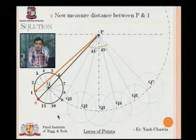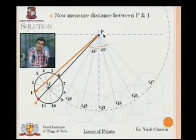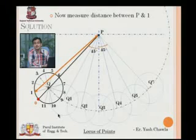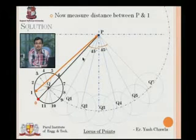How can I do it? See, I'll take the radius. I'll measure the radius from P till 1 because that is a straight distance, that is the maximum distance of point 1 from P that is possible. So here on Q1, one is at a maximum distance from point P.